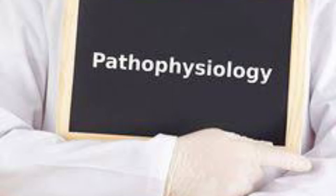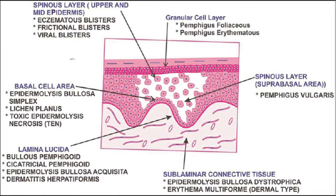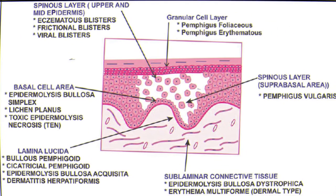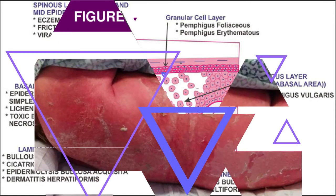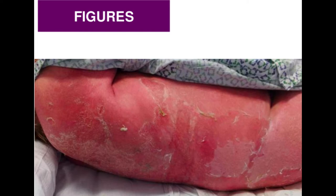The pathophysiology associated with Nikolsky's sign is intraepidermal acantholysis — that is, there is a loss of coherence between the epidermal cells due to the breakdown of intercellular bridges. This is not a separation between the dermal and epidermal layer, but a separation between two cells. The cells are intact, but the coherence between the cells is lost.